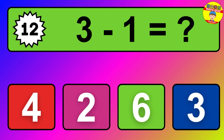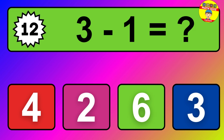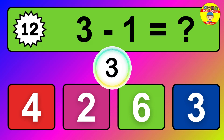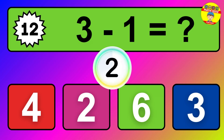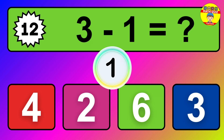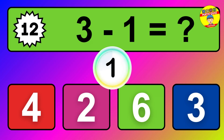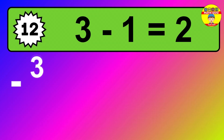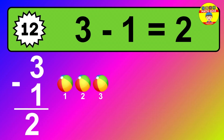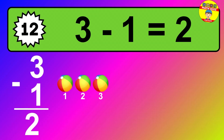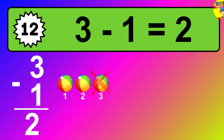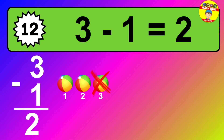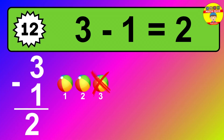Question twelve: three minus one equals what? So the answer is three minus one is two. Let's count it: one, two.